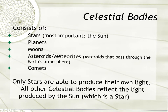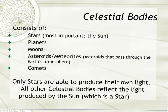When I say things, I mean stars, planets, moons — and remember, there are more moons than just our moon. There are also asteroids, or meteorites when they pass through Earth's atmosphere, as well as comets. What's interesting is that only stars are able to produce their own light. All other celestial bodies reflect the light being produced by the sun. The sun provides Earth with all of the energy that we need to survive. Anything that produces its own light we say is luminous, whereas anything that only reflects light we say is non-luminous.